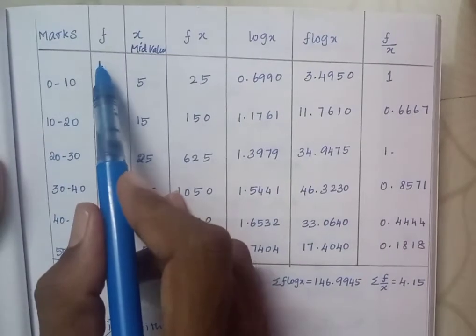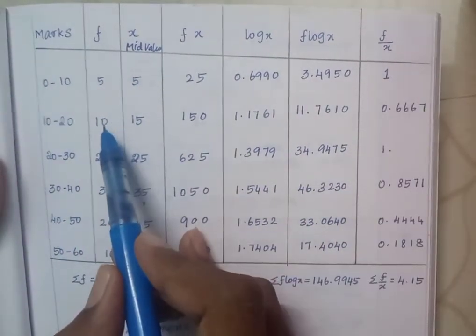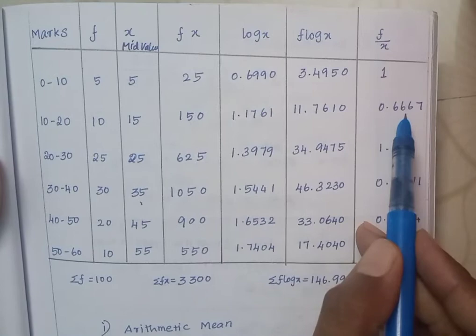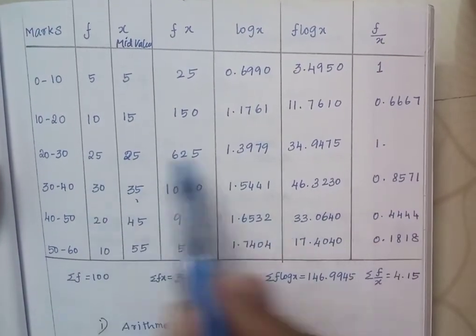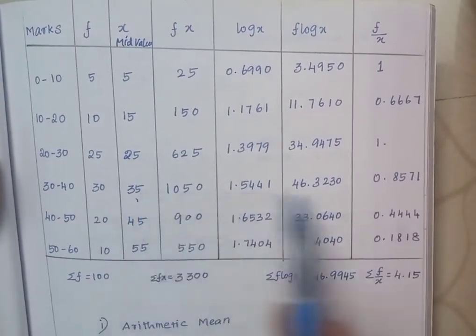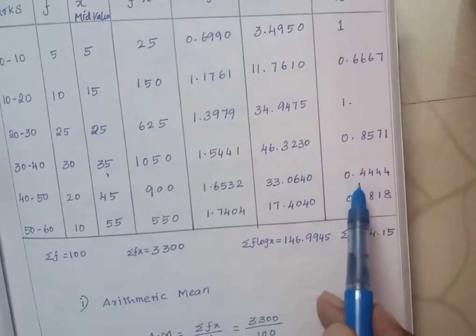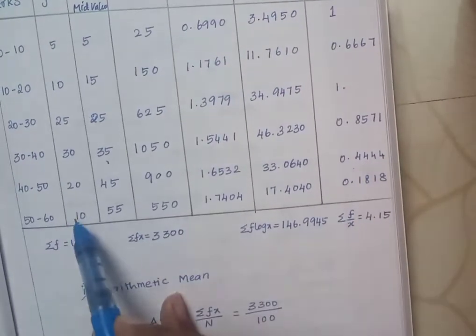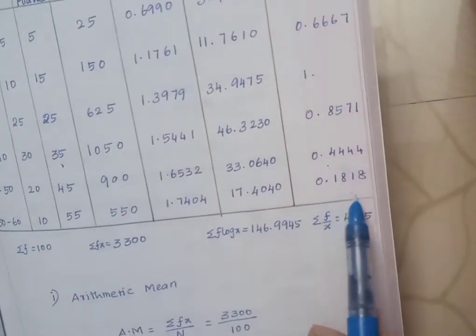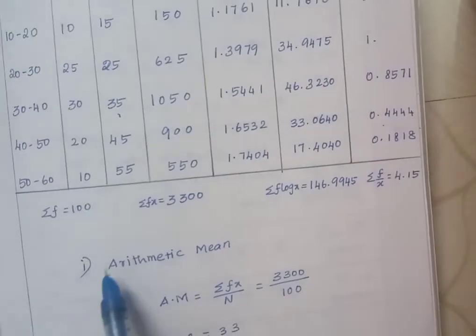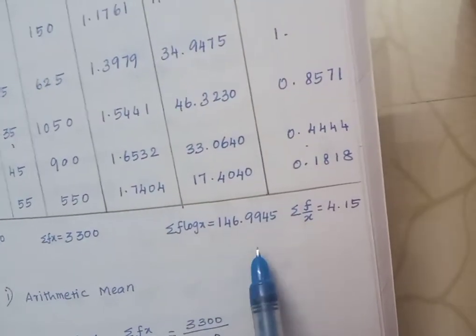F divided by x: 5 divided by 5 equals 1, 10 divided by 15 equals 0.6667, 25 by 25 equals 1, 30 by 35 equals 0.8571, 20 by 45 equals 0.4444, 10 divided by 55 equals 0.1818.